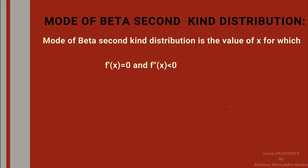The mode of a beta second kind distribution is the value of x for which the first derivative of the PDF is 0 and the second derivative must be negative. The solution of these two equations is the value of the mode, so we shall calculate the mode.